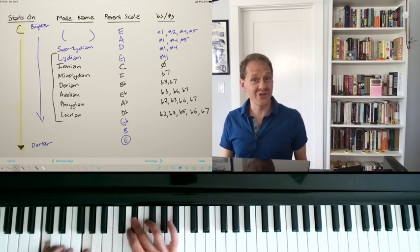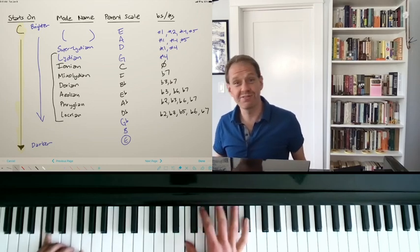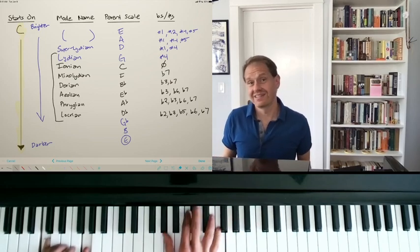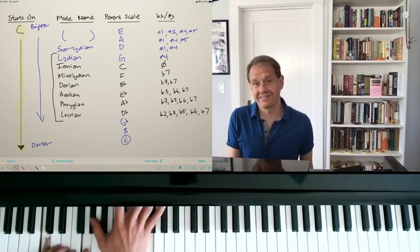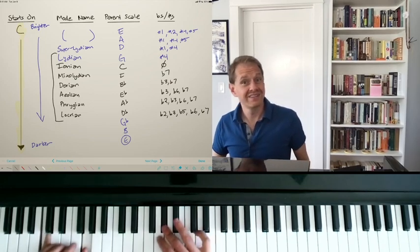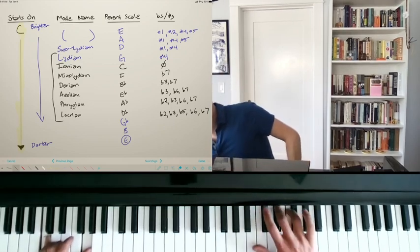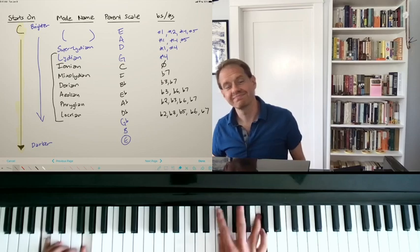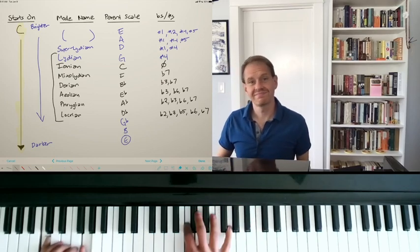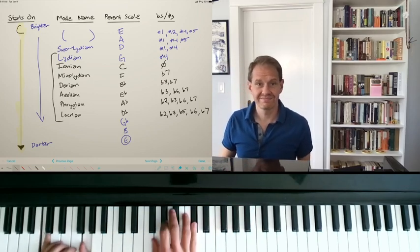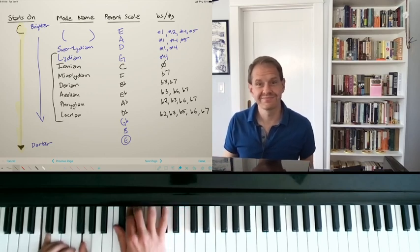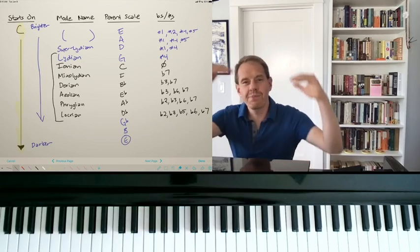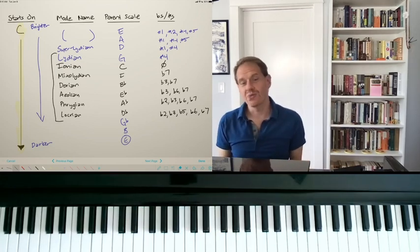When you're ready, introduce that minor third — that brings you to Dorian. Then you get the minor sixth, which changes the color entirely to get to Aeolian. And then the flat two — that's Phrygian. And then the flat five — that's Locrian. So we've gone all the way from our brightest mode to our darkest mode.